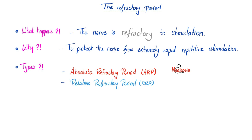So what is the refractory period? Well, it's a period in which the nerve is refractory. What does refractory mean? Means it's not responsive to stimulation. It's not being stimulated. Why do we need this? To protect the nerve from extremely rapid repetitive stimulation, which can kill the stinking nerve. And we have two types.